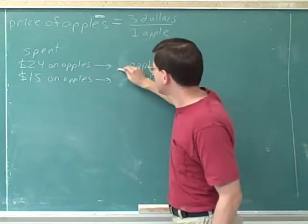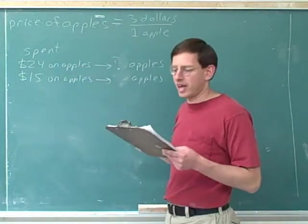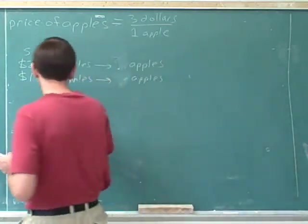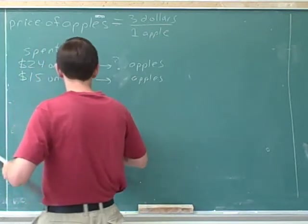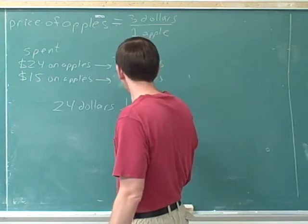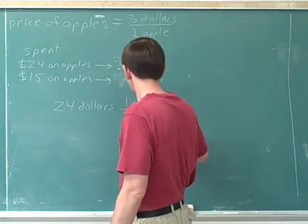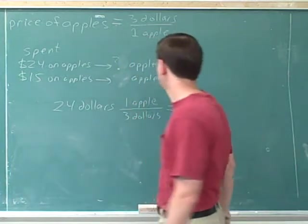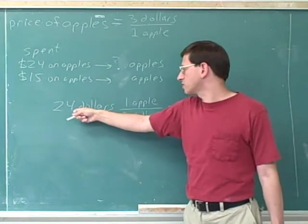So let's say that we didn't know yet how many apples you bought. You spent $24 on apples. How many apples is that? Let's work that out. You spent $24, and we know that one apple would cost $3. We know that one apple would cost $3, and you actually spent $24.